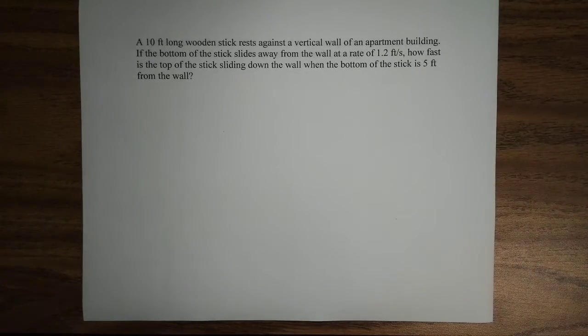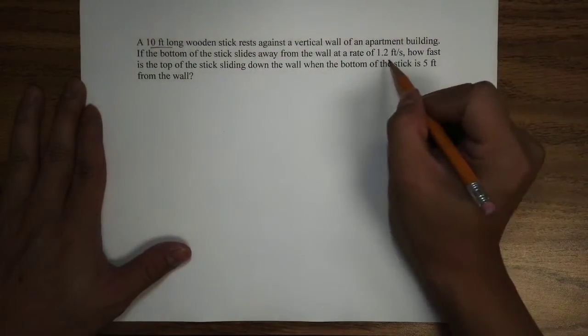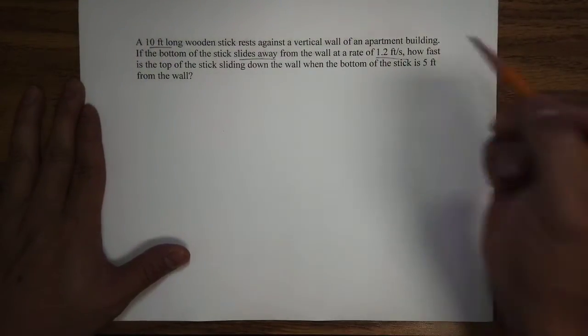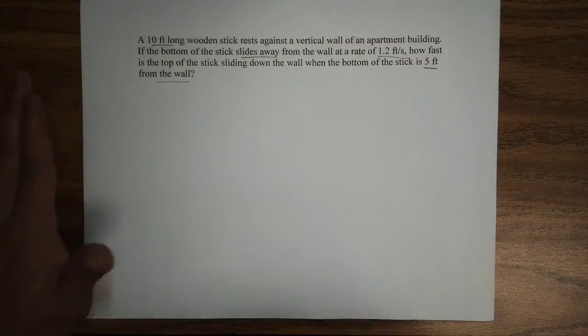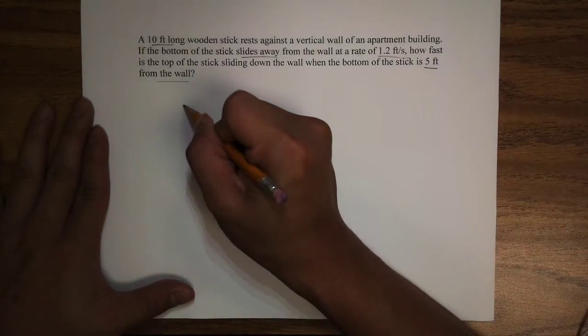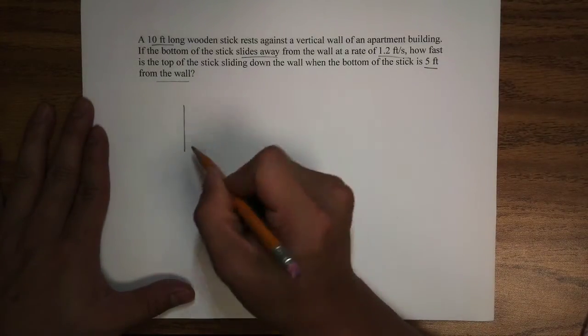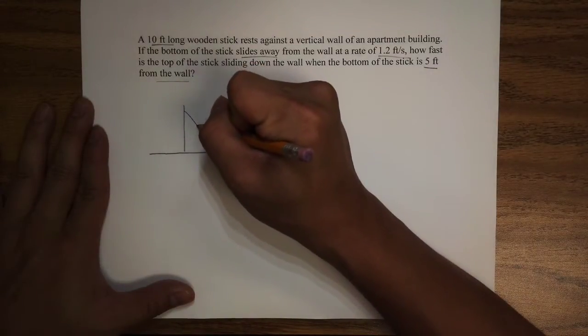So you can pause the video and read the question for a quick moment, but I'm going to start this question. So I'm going to first underline the key information on the question, and I'm going to draw a picture to illustrate this problem. So we have a vertical wall, and this is my ground, and there's a wooden stick right here.